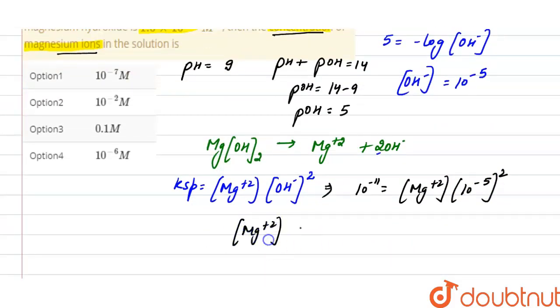And after solving, concentration of magnesium ions it is equals to 0.1 molar. And the correct option here will be option 3.